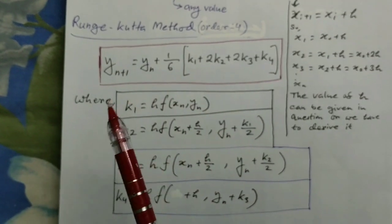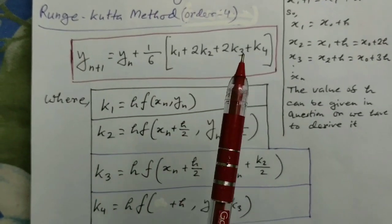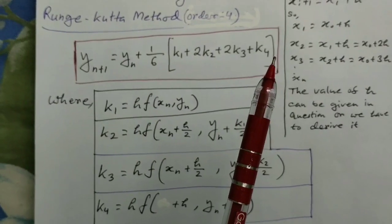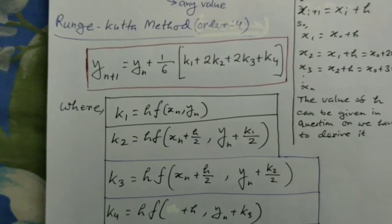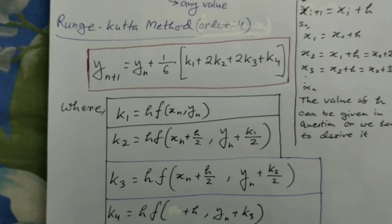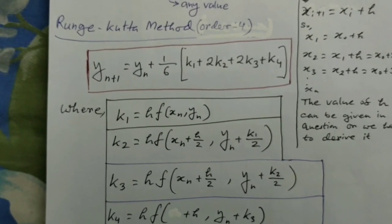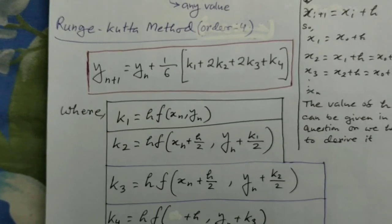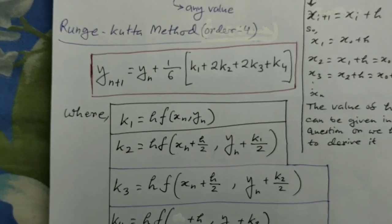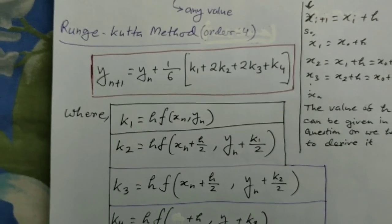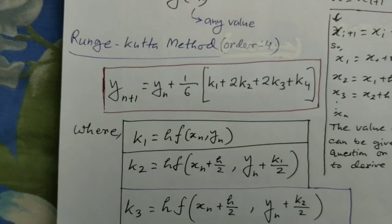The formula for the Runge-Kutta method of order 4 is: yₙ₊₁ = yₙ + (1/6)(k₁ + 2k₂ + 2k₃ + k₄). Here k₁ is the slope at the beginning of the interval, k₂ is the slope at the midpoint using y and k₁, k₃ is again the slope at the midpoint but using y and k₂, and k₄ is the slope at the end of the interval using y and k₃.